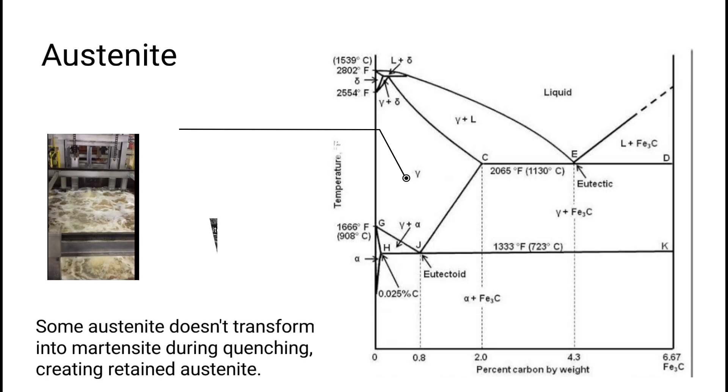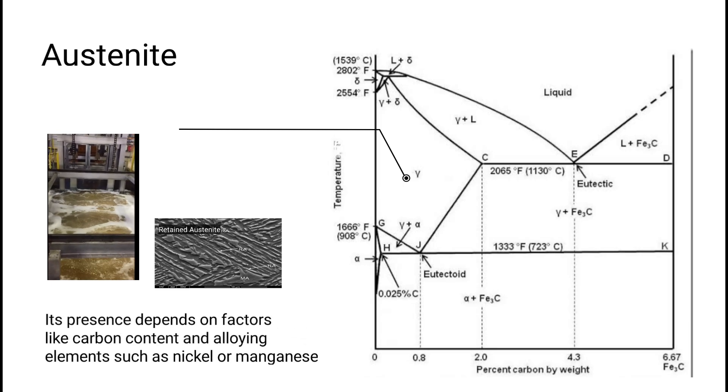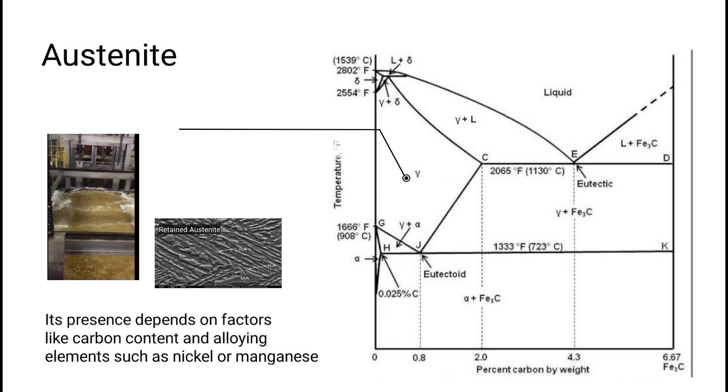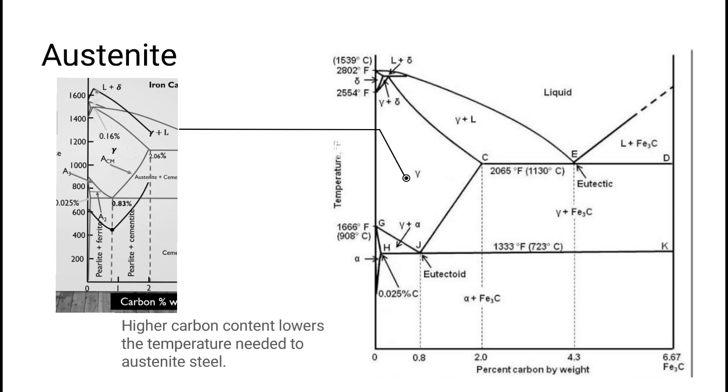Some austenite doesn't transform into martensite during quenching, creating retained austenite. Its presence depends on factors like carbon content and alloying elements such as nickel or manganese. Carbon plays an important role in heat treatment because it expands the temperature range of austenite stability. Higher carbon content lowers the temperature needed to austenize steel.